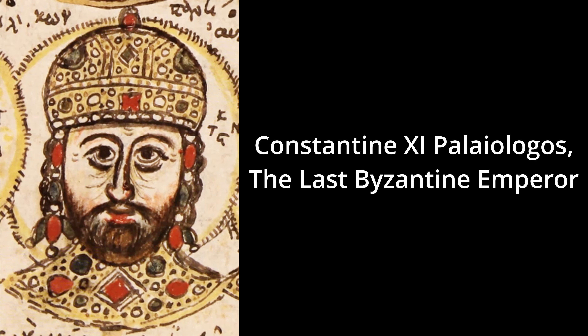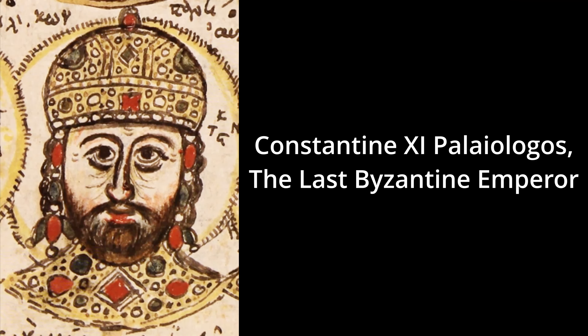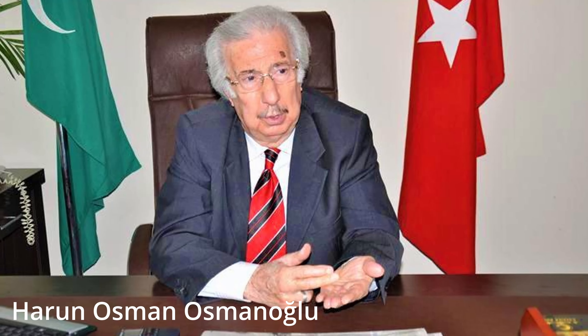This does flow pretty well into our next question: who would be the Roman Emperor today? Well, if we follow the path of succession in the Ottoman Empire, then we come to Harun Osman Osmanoglu — and I apologize if that is incorrectly pronounced — the current head of the House of Osman, and the man who would be Caliph.